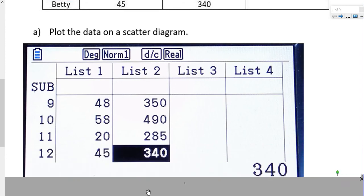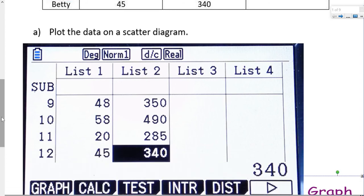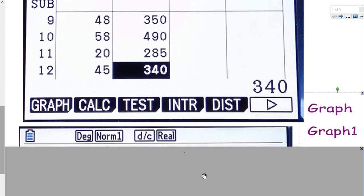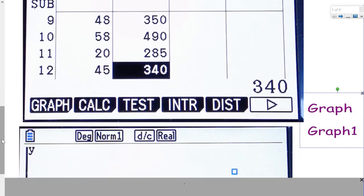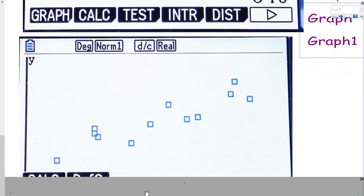I've put all these values into list one and list two on the calculator. I'm pressing graph and then graph one. And I can get from the calculator a graph that looks like this. 12 points are on there and you can see some kind of linear correlation going along there. So that was part A.